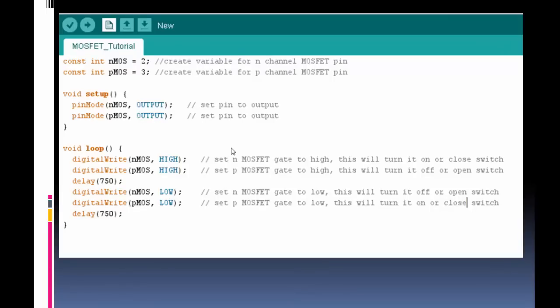Here's the code for the example I'm about to show. All I'm going to do is take two digital pins. I create variables to represent my digital pins and which MOSFET is connected to it. The NMOS is the N-channel. In my setup code, I turn my digital pins to outputs. So I can either output 0 volts, which is ground, or 5 volts.